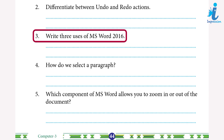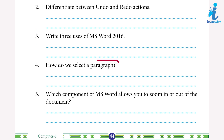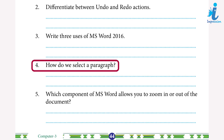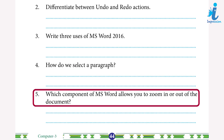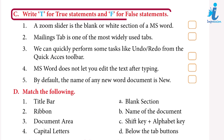Four, how do we select a paragraph? Answer: we can select a paragraph in a document by clicking on a text section three times with the left mouse button. Five, which component of MS Word allows you to zoom in or out of the document? Answer: the zoom slider component of MS Word allows you to zoom in or out of the document.